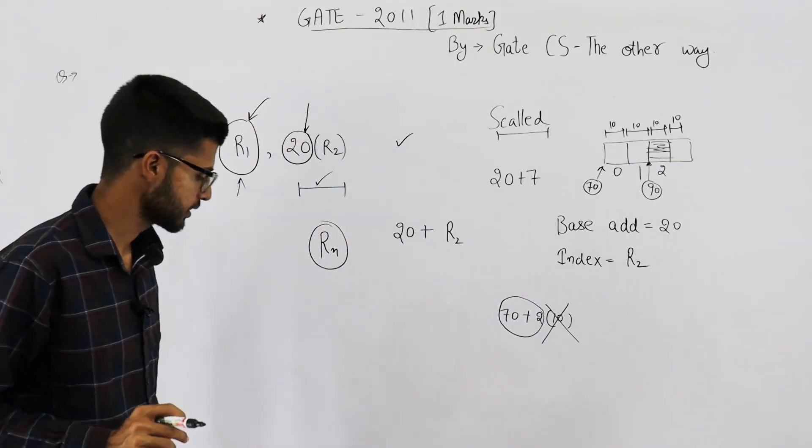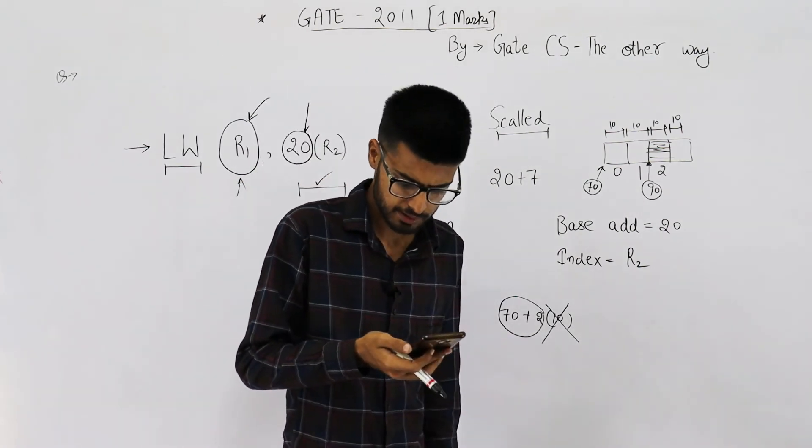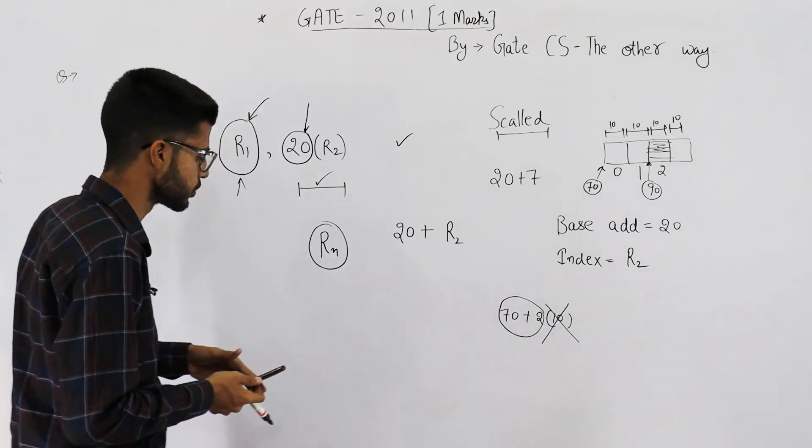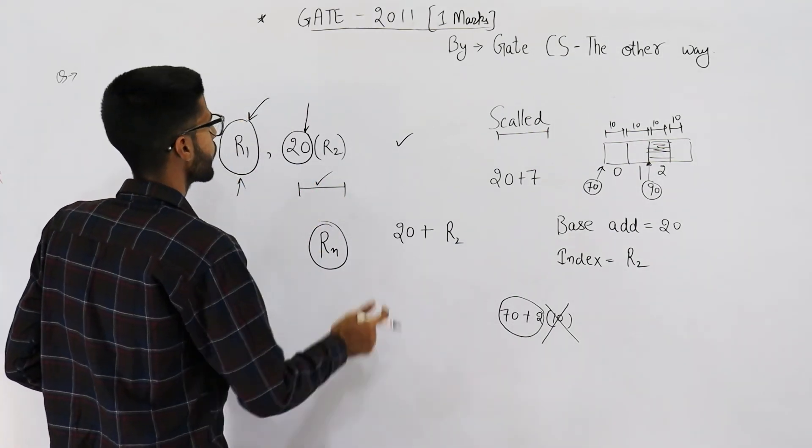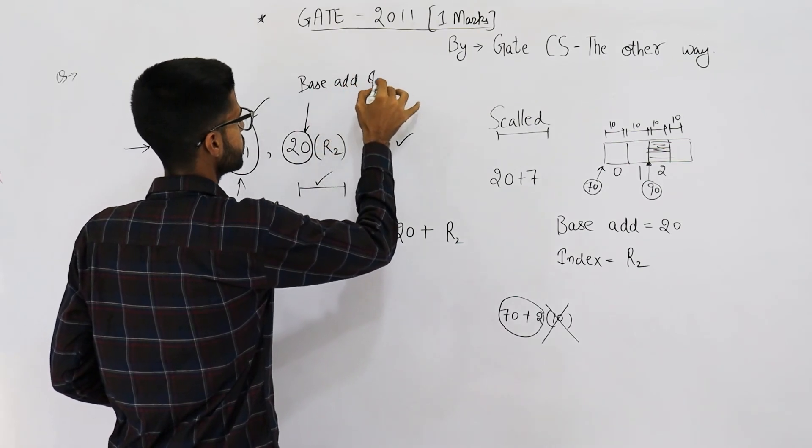Anyways, that's not the answer. Answer is D part, which is base indexed addressing mode. And this addressing mode is mostly used for arrays. This is 20's base address of array.